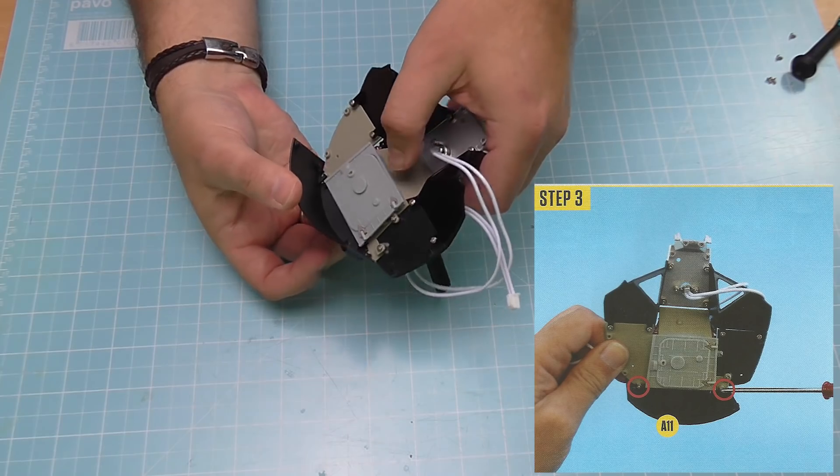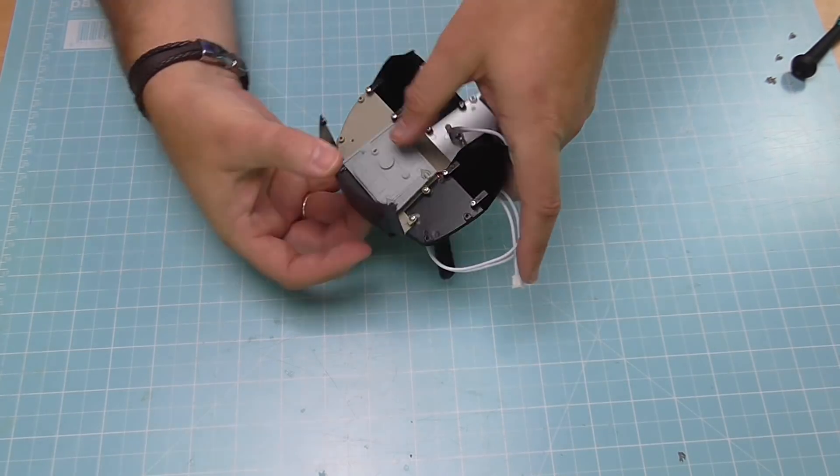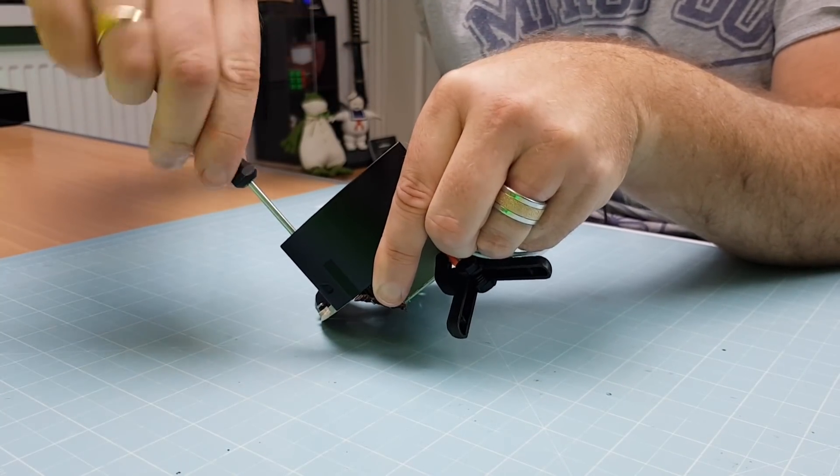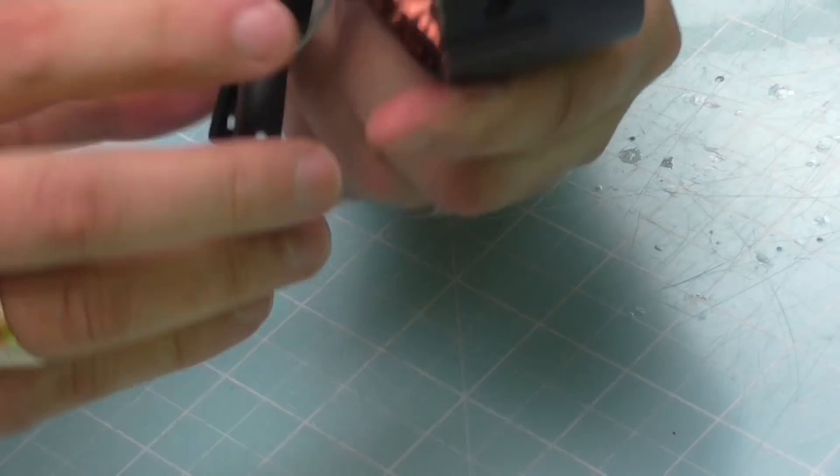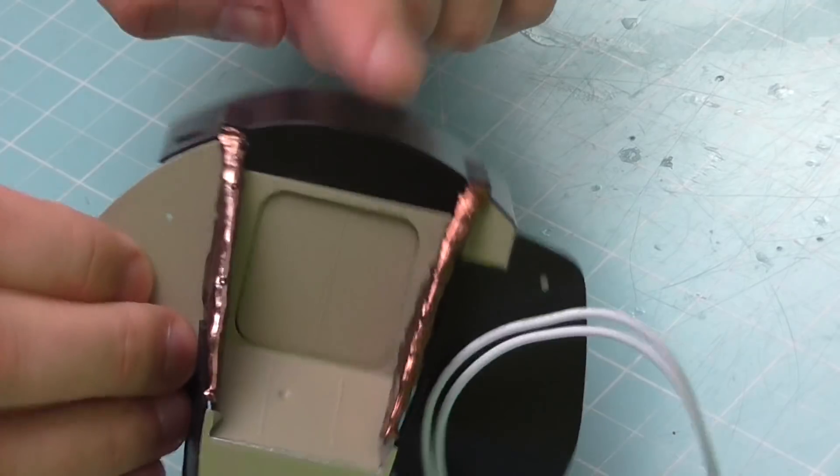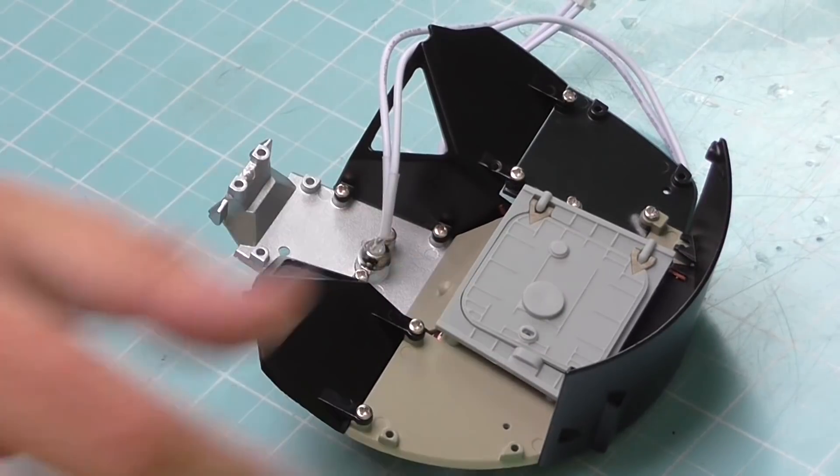So once I've actually screwed this in, I can remove the clamps. I've got another screw to put in because obviously these now can't slide out because the hatch is holding it in place. So one more screw to put in.